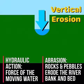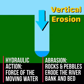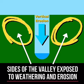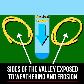Hydraulic action, caused by the force of the moving water, and abrasion, caused by rocks and pebbles which make up the river load, leads to vertical erosion of the river channel. This continues over time to expose the sides of the valley to weathering and further erosion such as freeze-thaw action.